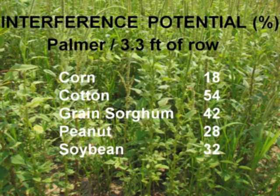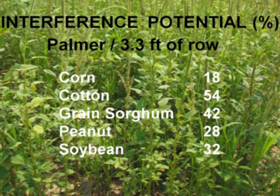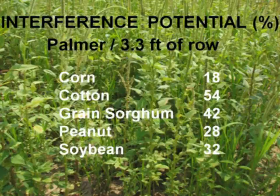Looking at the interference potential — the competition and allelopathy in cotton with one plant every 3.3 feet or a meter causes 54 percent yield loss. In corn it's only about 18 percent. So you can see it's very competitive.